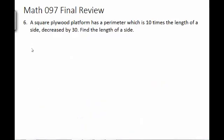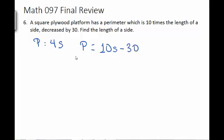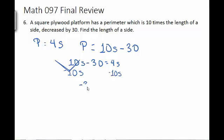Number 6: A square plywood platform has a perimeter which is 10 times the length of a side decreased by 30. Find the length of a side. The perimeter of a square is 4 times the length of a side. This also tells me that the perimeter is 10s minus 30, which equals 4s. We get the s's together by subtracting 10s, giving negative 30 equals negative 6s. Dividing both sides by negative 6 gives s equals 5.